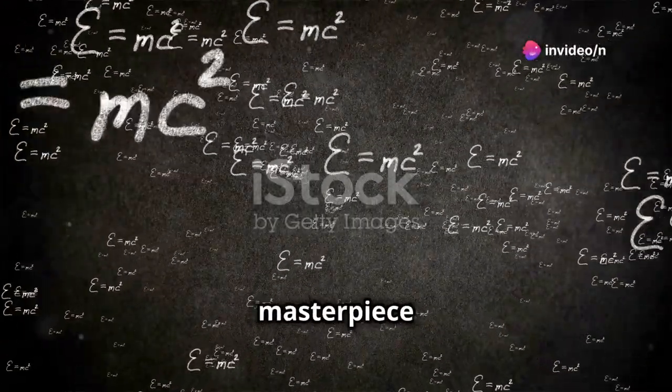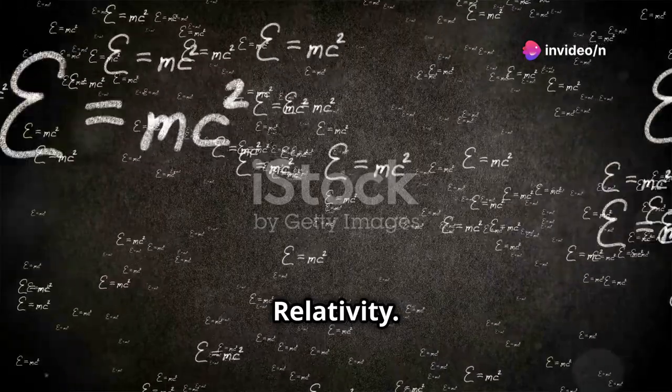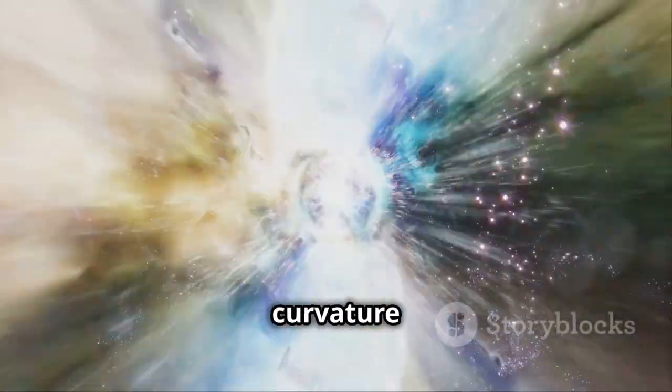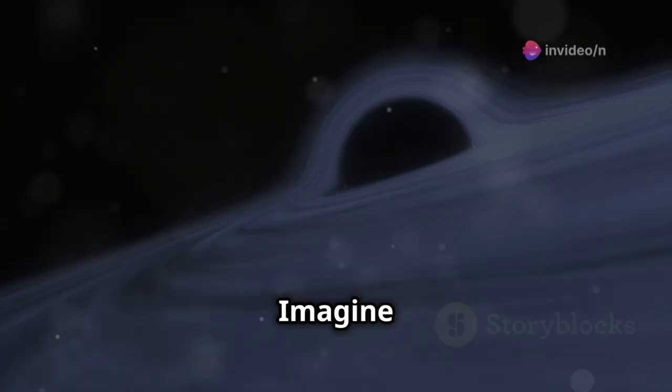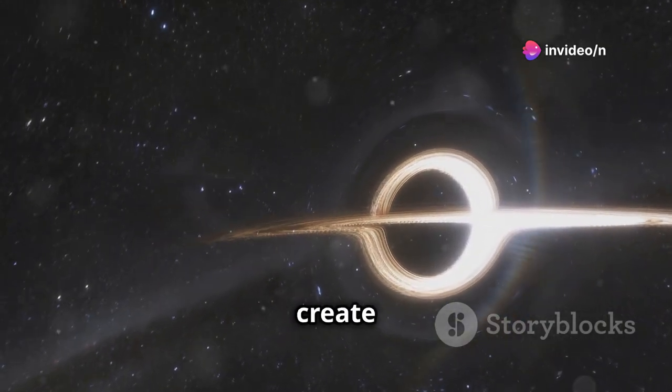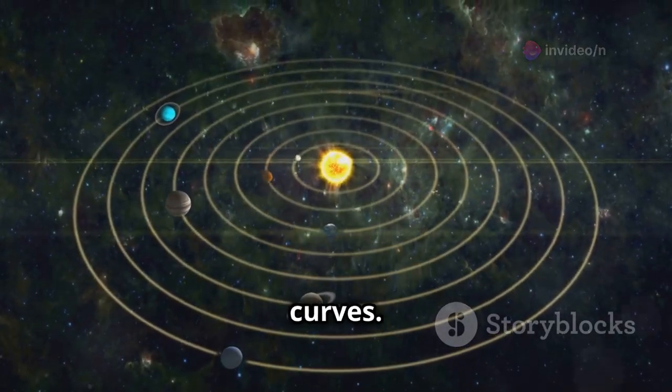Let's start with Einstein's masterpiece, General Relativity. It's a theory of gravity but unlike anything before it. Einstein realized that gravity isn't a force. It's the curvature of space and time. Imagine space-time as a rubber sheet. Massive objects like stars create dips in this sheet. Planets orbit by following these curves.